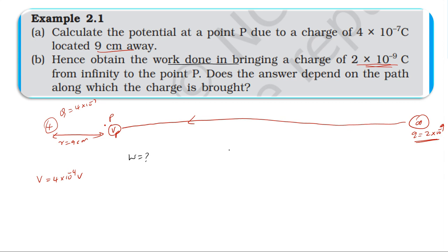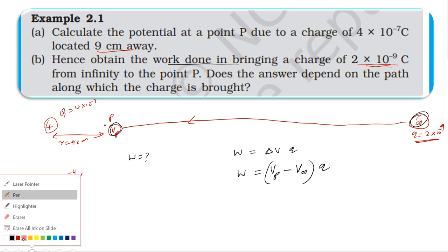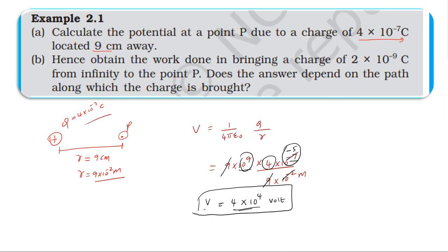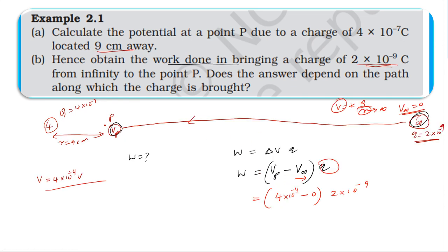In bringing the charge, the work done is in the form of potential difference multiplied by the charge. So work W = q × (V_final − V_initial) = q × (V_P − V_∞). The initial point is infinity and the final point is P. The potential at infinity is zero, so V_∞ = 0. The potential at point P is 4×10⁴ volts. The charge q = 2×10⁻⁹ coulomb.